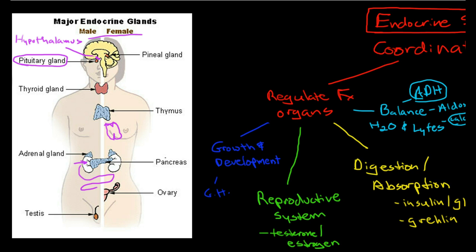The hypothalamus primarily secretes releasing hormones, and these releasing hormones control the release of many of the other hormones in our body. The pituitary gland secretes tropic hormones, which also help to control the endocrine glands in what's called the hypothalamic pituitary axis, which we'll talk about later. That's the anterior pituitary. There are actually two parts of the pituitary gland — the posterior pituitary gland produces ADH, anti-diuretic hormone, and oxytocin, which is primarily involved with the production and secretion of breast milk.